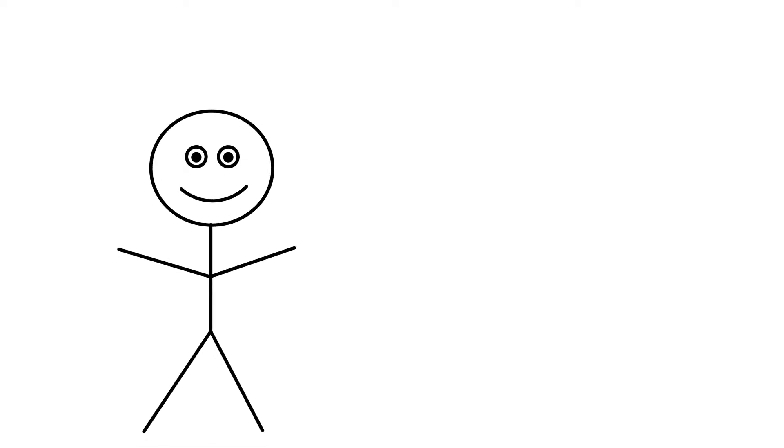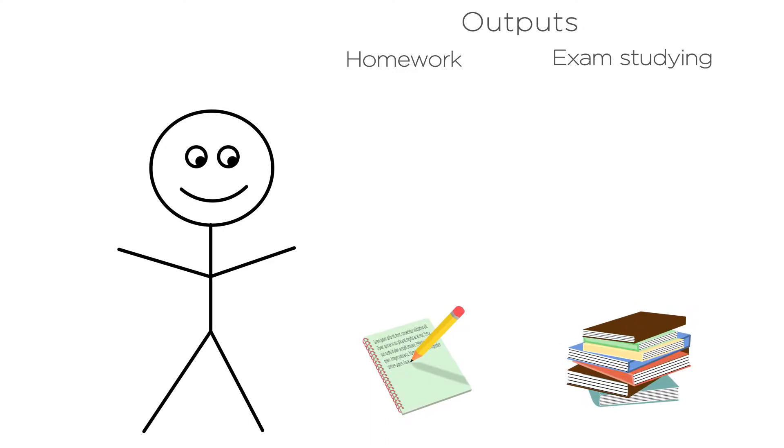Think about yourself as a firm. Let's focus on two outputs you have as a firm: homework and exam studying. You have a given amount of inputs, your time and brain power, and let's assume that you're using these inputs as efficiently as possible. That is, whether you're producing homework or studying for exams, you're using the most efficient mix of time and brain power to do so.